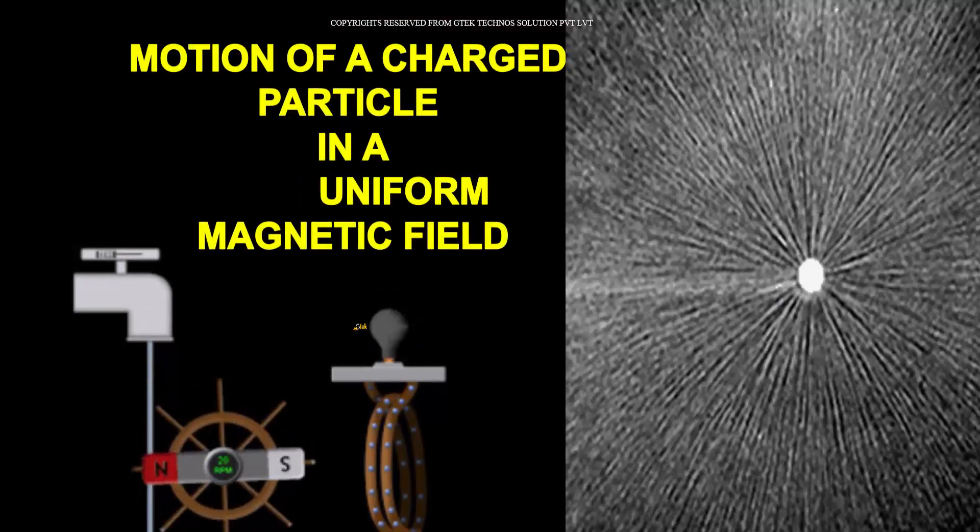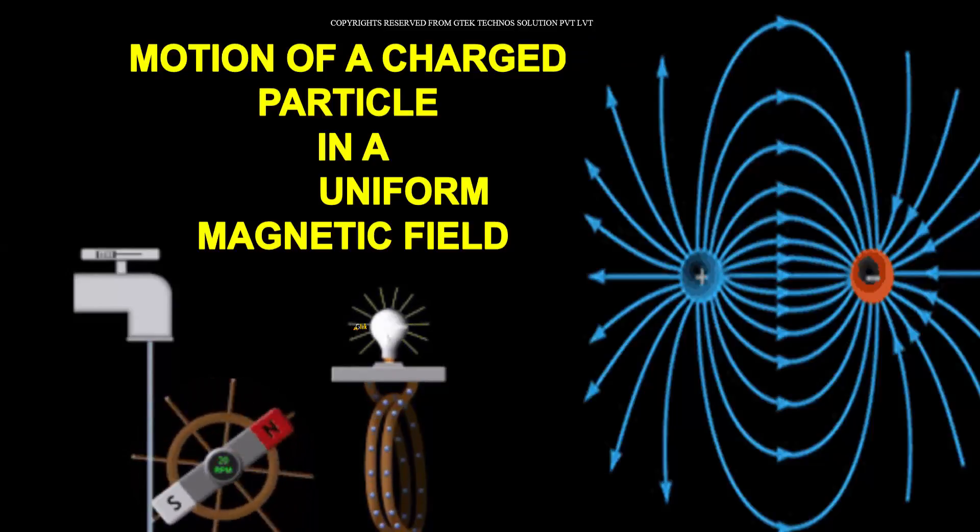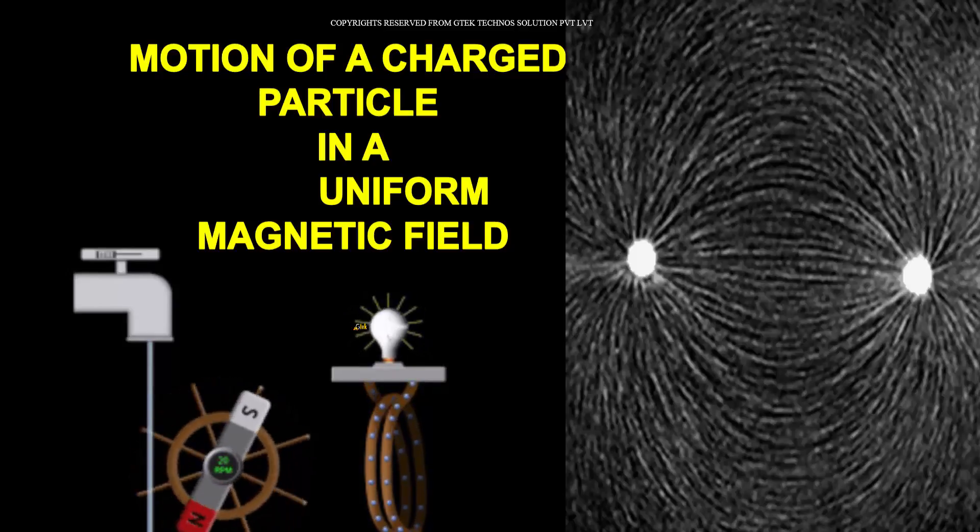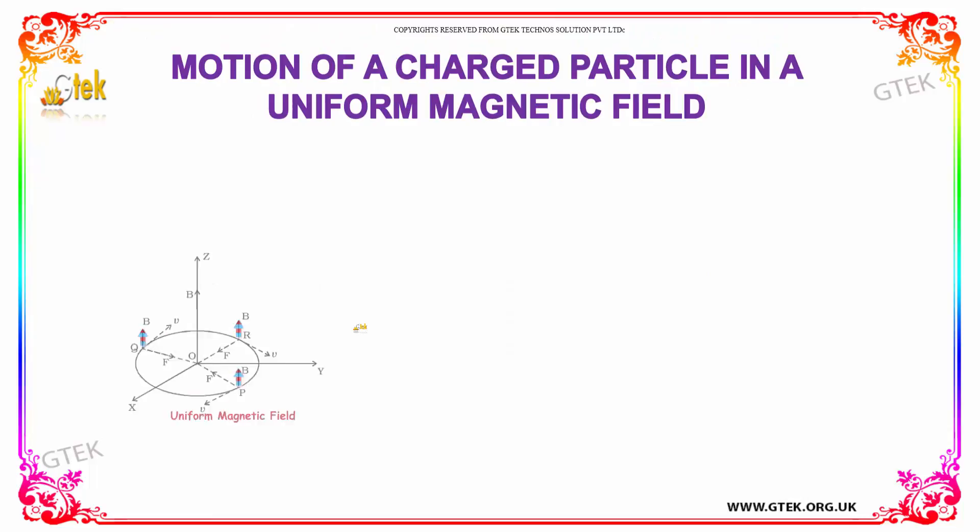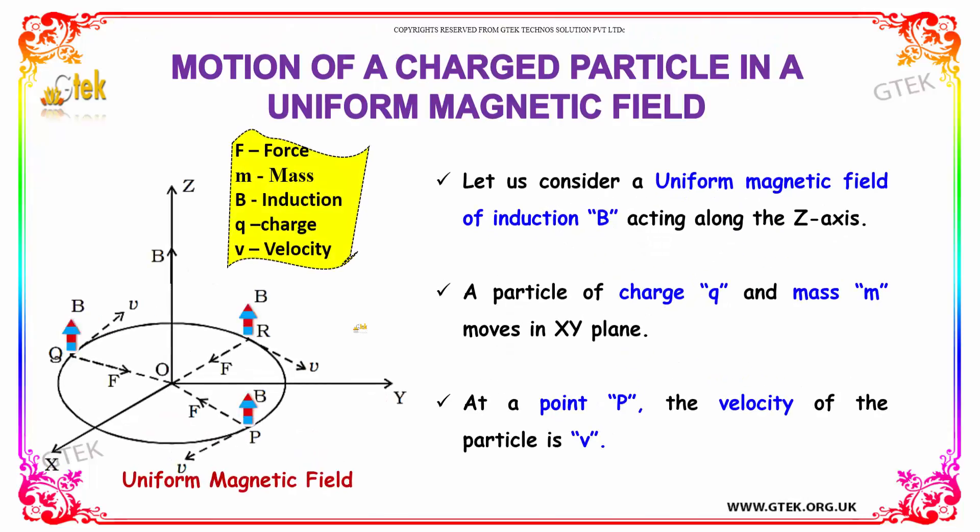Now let's talk about the motion of a charged particle in a uniform magnetic field. Let's consider a uniform magnetic field of induction B acting along the Z axis. A particle of charge Q and mass M moves in a XY plane.